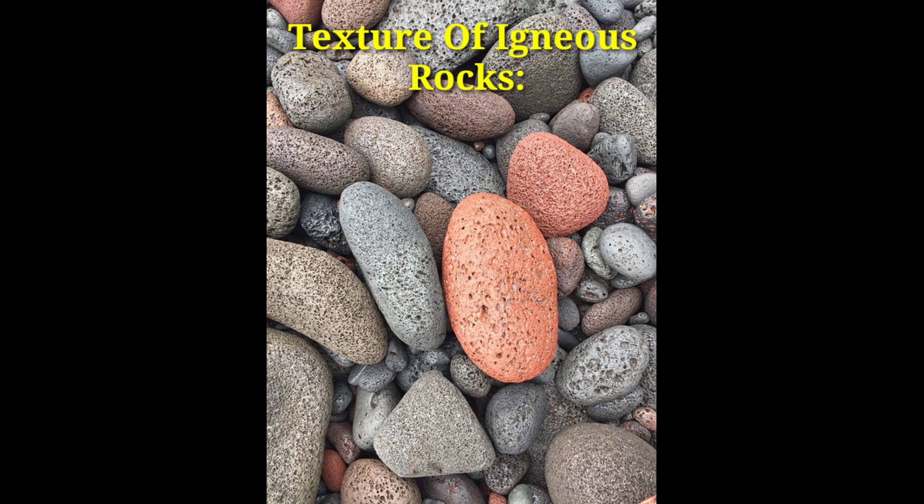There are nine main types of igneous rock textures: phaneritic, vesicular, aphanitic, porphyritic, poikilitic, glassy, pyroclastic, equigranular, and spinifex. Each kind of texture has a variety of different characteristics that make them unique.